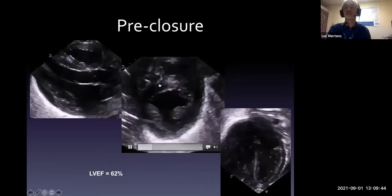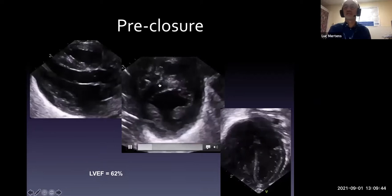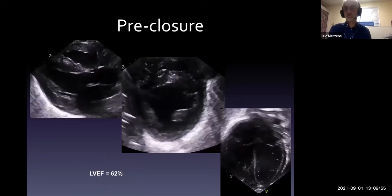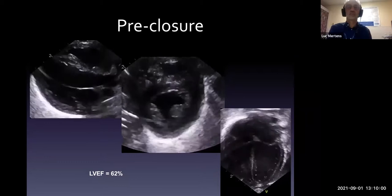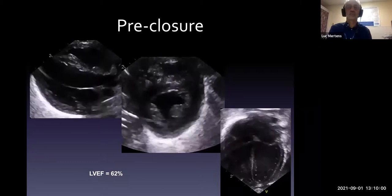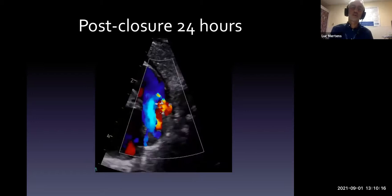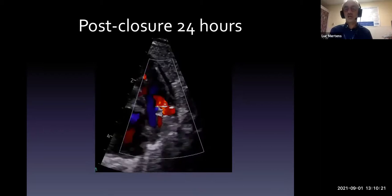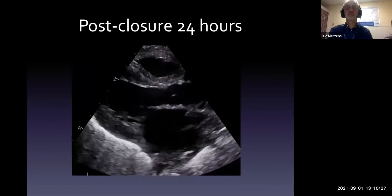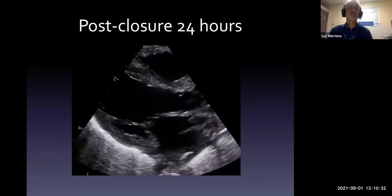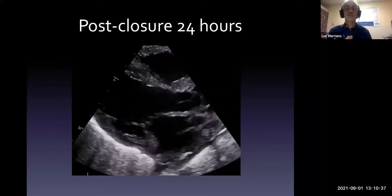There is some septal flattening both in systole and diastole, suggesting some elevation in RV pressures, mainly related to the widely open duct in the pulmonary circulation. The patient went to the cath lab, underwent PDA closure with a device, and there is a small residual shunt through the device — but definitely a very significant reduction in left-to-right shunting compared to pre-closure. This is the function at 24 hours post-closure, and you can clearly see a difference compared to the pre-closure study.